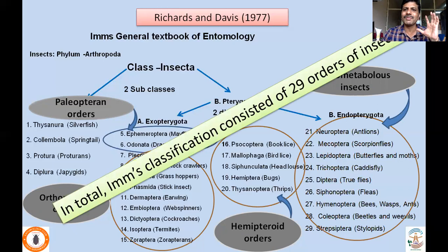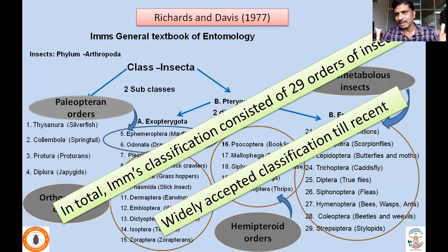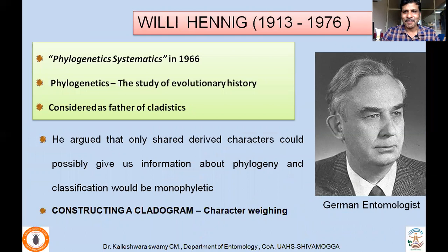This classification, consisting of 29 insect orders, was widely recognized and followed till recent period — maybe the last 20 to 25 years — and was considered a widely accepted classification. It is now being subjected to change after the entry of Willi Hennig. Hennig is called the father of cladistics, who published Phylogenetic Systematics in the German language. He is a German entomologist and dipteran taxonomist.